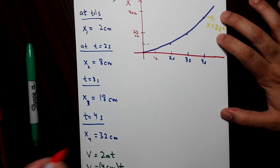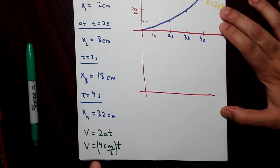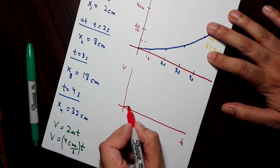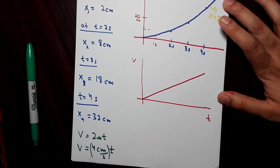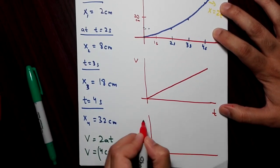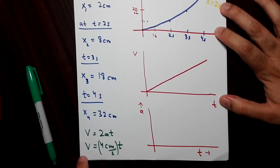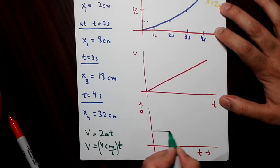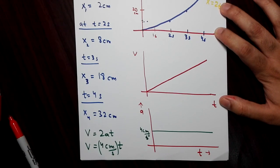Since a is 2 centimeters per second squared, you get v equals 4 centimeters per second times t. If you plot velocity versus time, you get a straight line with a fixed slope — it's just a linear function, like y equals mx. For the acceleration versus time graph, since the slope of the velocity line is fixed, the acceleration is just the derivative of velocity, which gives a constant value of four centimeters per second squared.